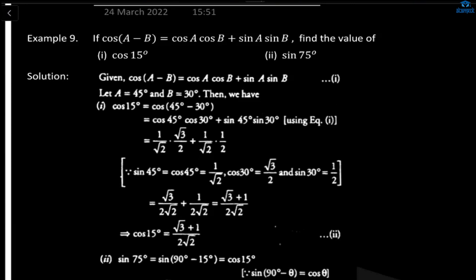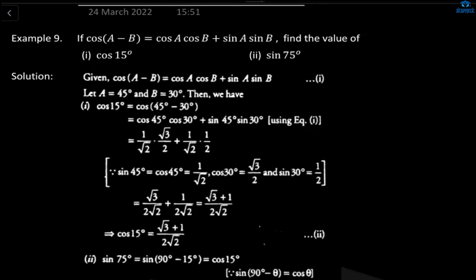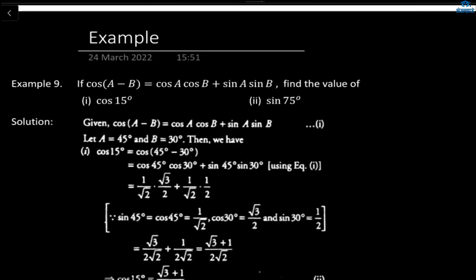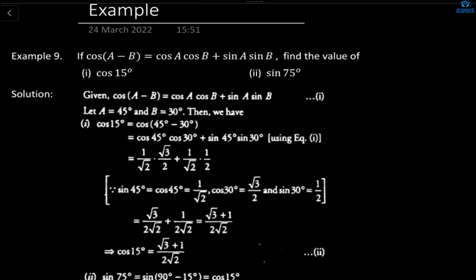So if sine is here — sine 90 minus theta — then it will be cos. If cos 90 minus theta, then it will be sine. For example, cos 15 can be written as cos(90 minus 75), which equals sine 75. In this way we have solved many questions. We'll see two or three more questions and then switch to another topic.